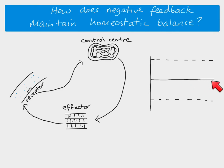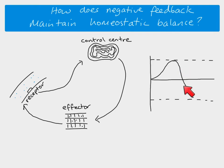We can look at negative feedback as a graph. There's a set level the body wants to keep a factor at, with tolerance limits above and below — as long as the factor stays within this region, cells are able to function effectively. If a factor increases above the set limit, receptors send impulses to the control center, which sends impulses to the effector to bring it back down. It will nearly always drop below the set limit, at which point the receptor signals the control center to bring it back up.